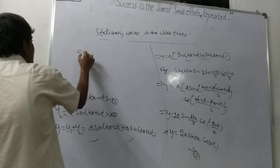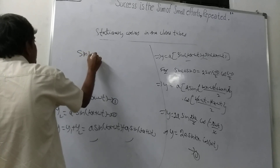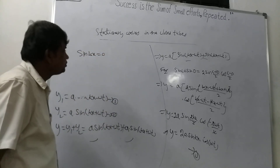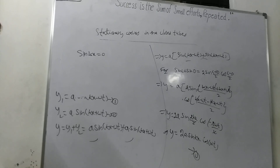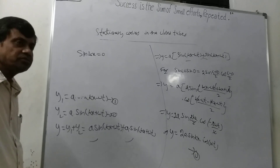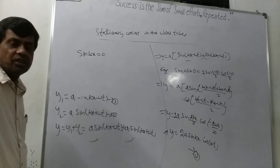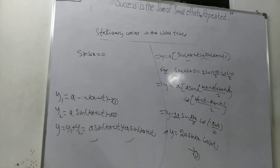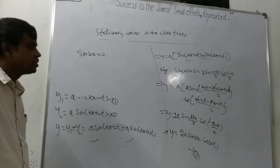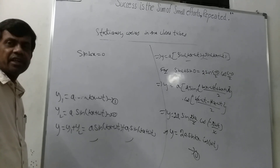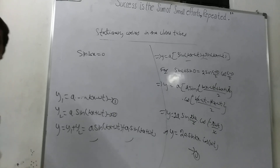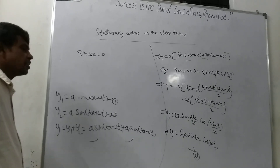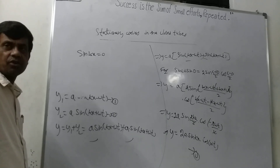When sin(kx) equals zero, the amplitude A is equal to zero. Amplitude is minimum, and we are getting a node.